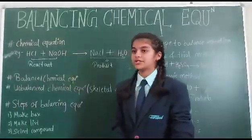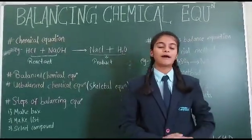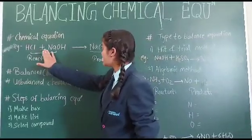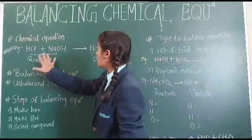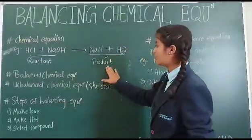Let's see what is a chemical equation. It is the representation of a chemical reaction by using formulas and symbols. For example, HCl plus NaOH gives rise to NaCl plus H2O. In this, the left hand side is reactant and right hand side is called product.